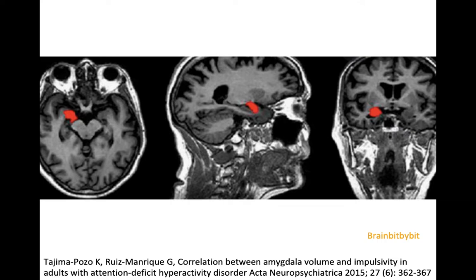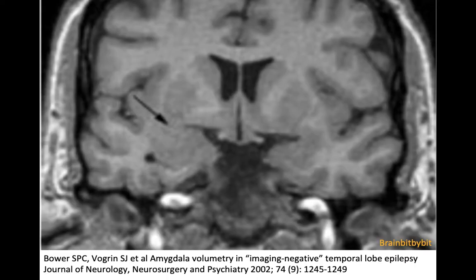The amygdala is important in fear and anger, and is associated with ADHD, anxiety, and depression. As early as 2002, there were reports of enlargement of the amygdala in patients with epilepsy who did not have any hippocampal or neocortical abnormalities.